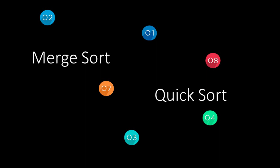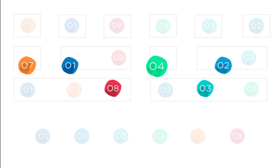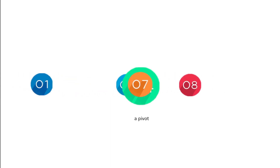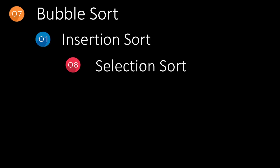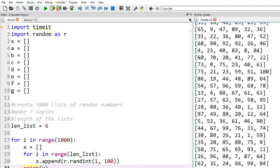Merge sort and quick sort are divide and conquer, but are they more efficient than insertion sort, bubble sort, and selection sort? Is the shell sort really much better than the insertion sort? Let's have a look.